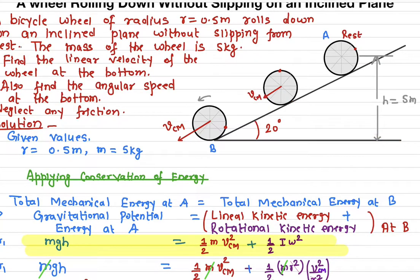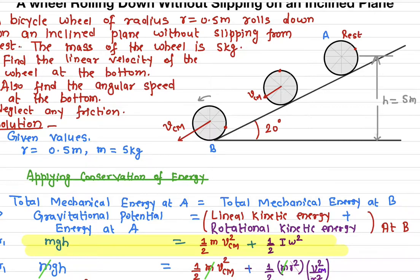Why is it rotational? Because the wheel is rotating. You see this red dot here — it is rotating. At the top point, the red dot is in one position, showing the wheel is rotating. If it were slipping, it would have only translational kinetic energy because the wheel would not be rotating.